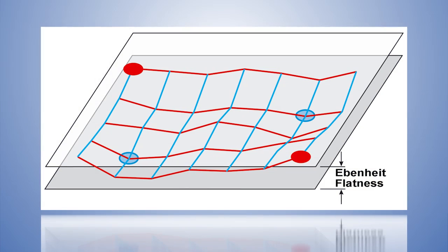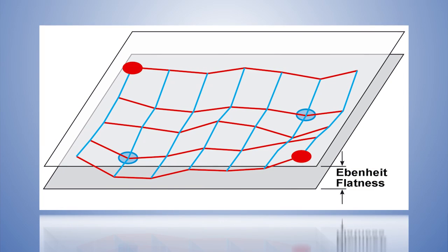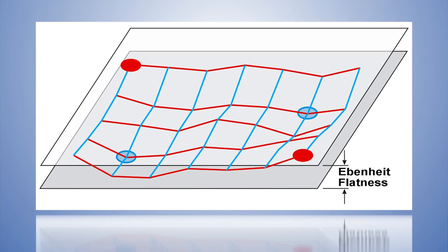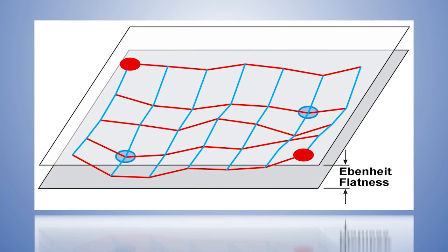Where is a relative measurement sufficient? In the flatness measurement, we are not interested in the inclination of the object, but in the structure, respectively, the flatness of the surface.